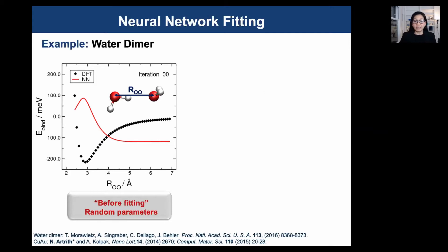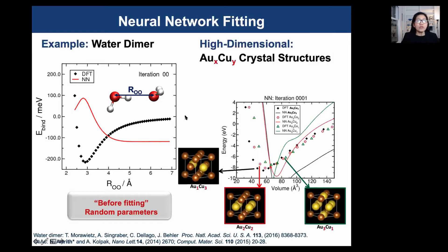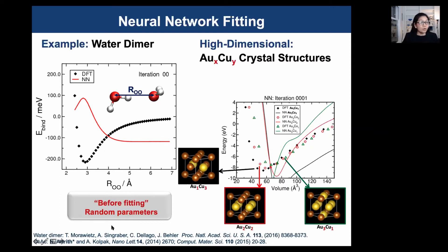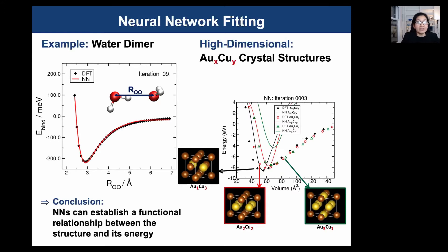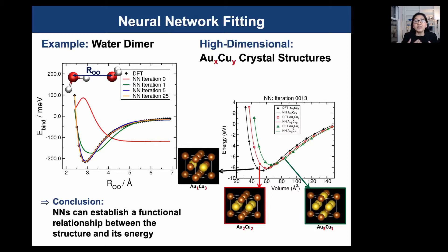This is an example of neural network fitting. We train neural potentials on reference data — for example, DFT. I show two simple examples: on the left-hand side, a water dimer, and on the right-hand side, high-dimensional copper-gold crystal structures. You can see the energy-volume curve for three different types of copper-gold alloy crystal structures. The symbols show DFT reference data and the solid lines show the neural network potential. Before neural network fitting we introduce random parameters, and after a few iterations of training, the neural network can accurately interpolate the reference data. The conclusion is that the neural network potential can really learn the relationship between structures and energy.